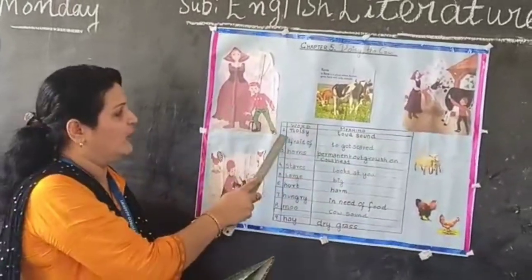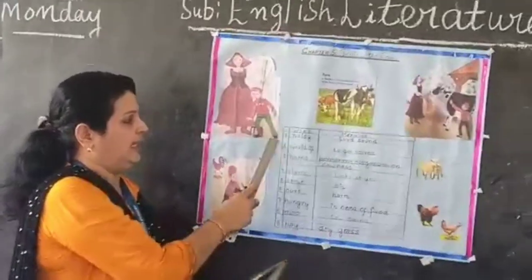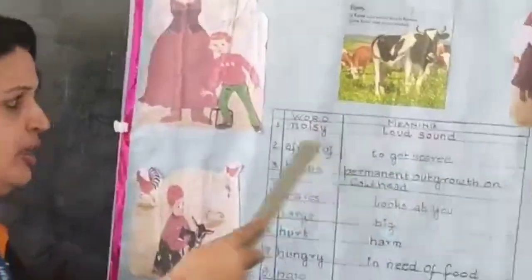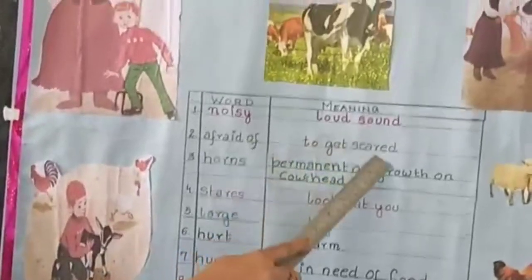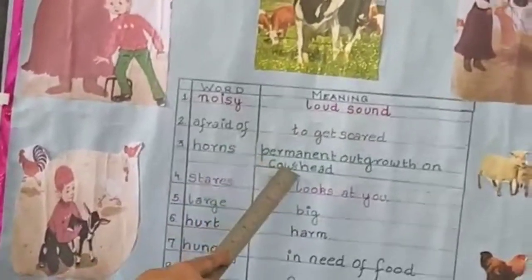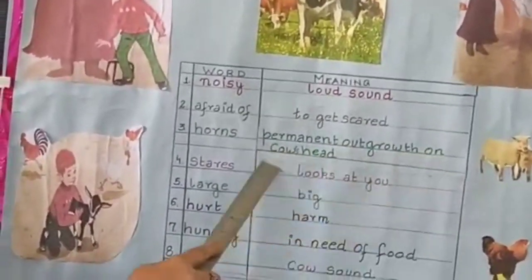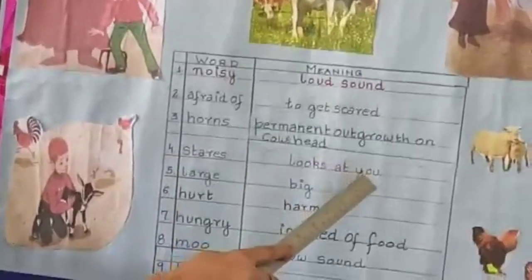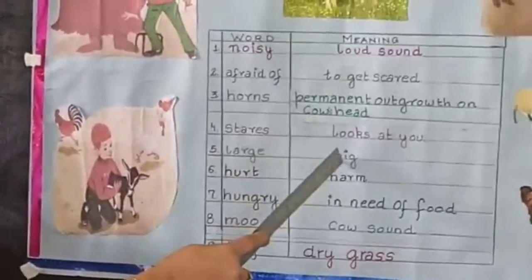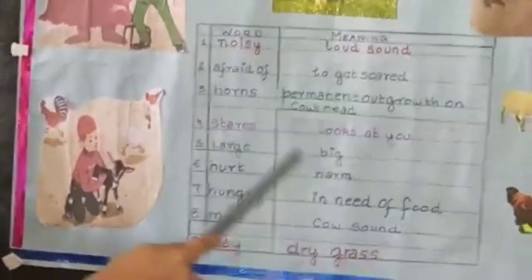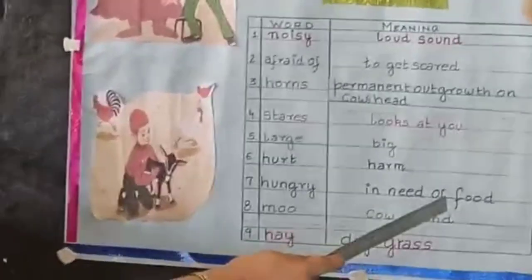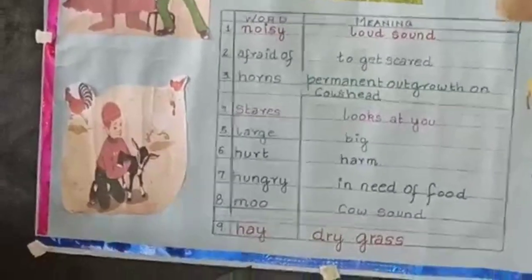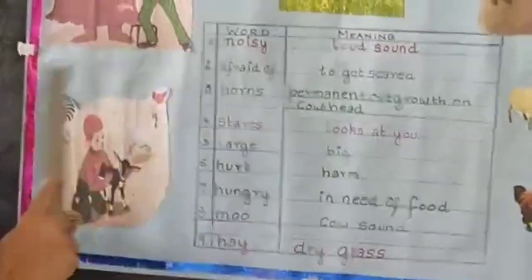Now we can go to the word meanings. Noisy means loud sound. Afraid of means gets scared. Horns are permanent outgrowths on a cow's head. Stares means looks at you. Large means big. Hurt means hard. Hungry means in need of food. Moo is the cow sound. Hay means dry grass.